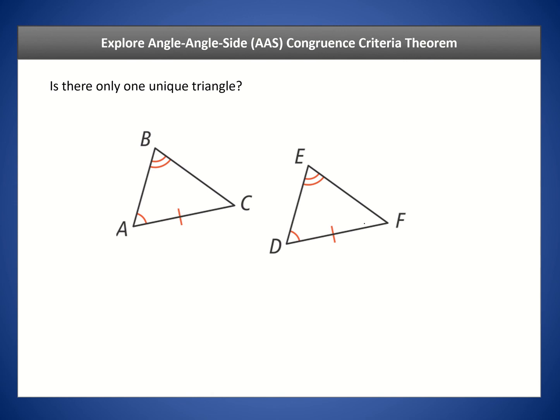Now let's explore the angle-angle-side congruence criteria theorem, also known as AAS. We have two triangles. We know angle B, we know angle A, and we know a side — hence it's called AAS. Same for the second triangle: we have an angle, another angle, and a side — hence AAS.